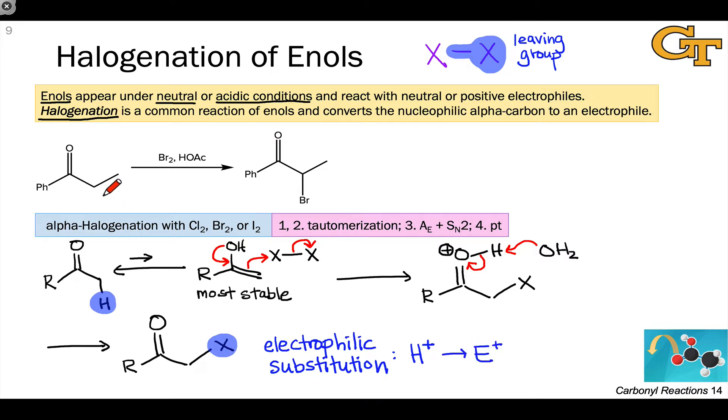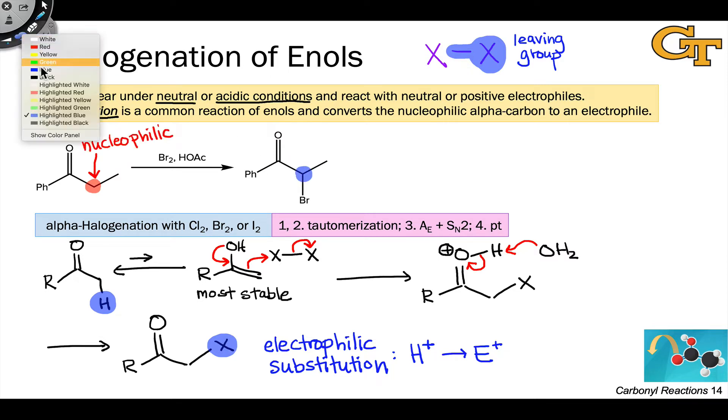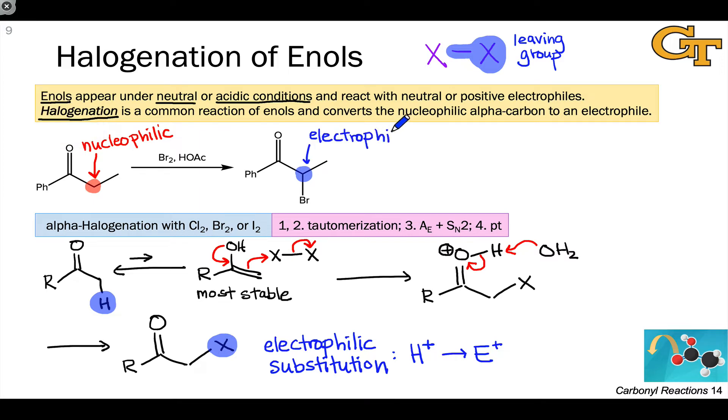The cool thing about this reaction synthetically is that it converts an atom that is intrinsically nucleophilic in the starting carbonyl compound, the alpha carbon, to one that is intrinsically electrophilic in the product. With the halogen group there, we now have the potential of that to act as a leaving group in a future step and substitute it for a nucleophile.